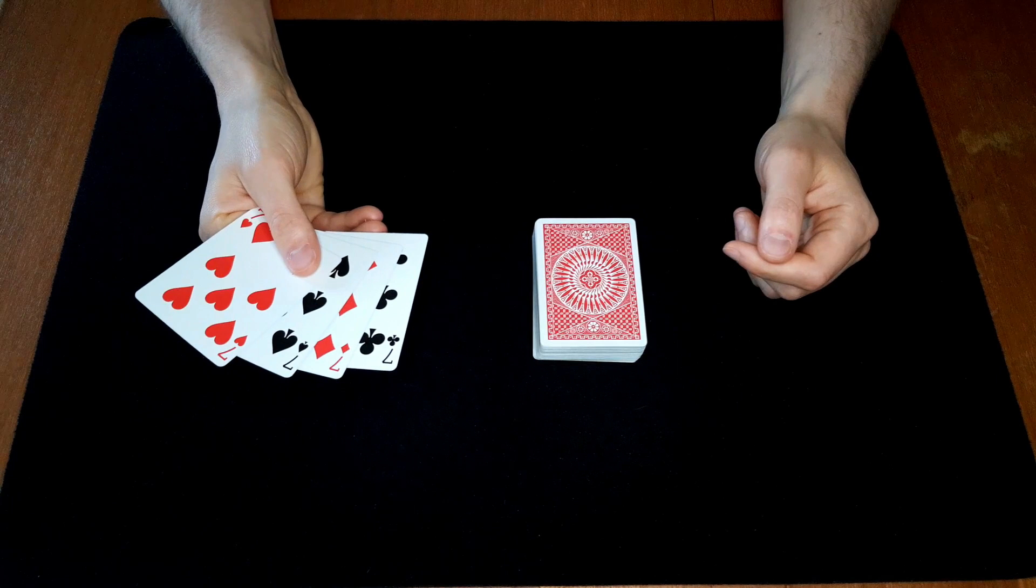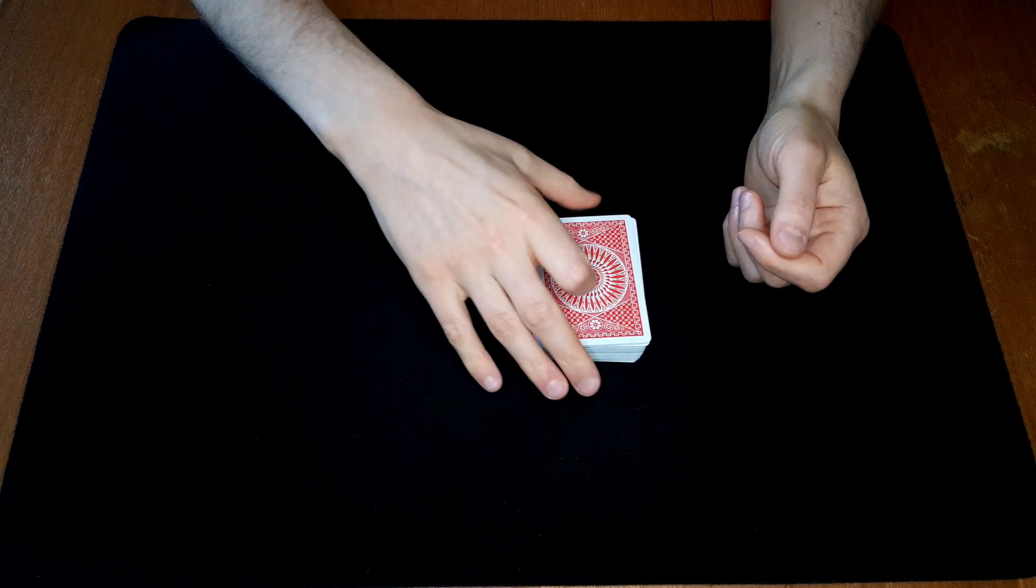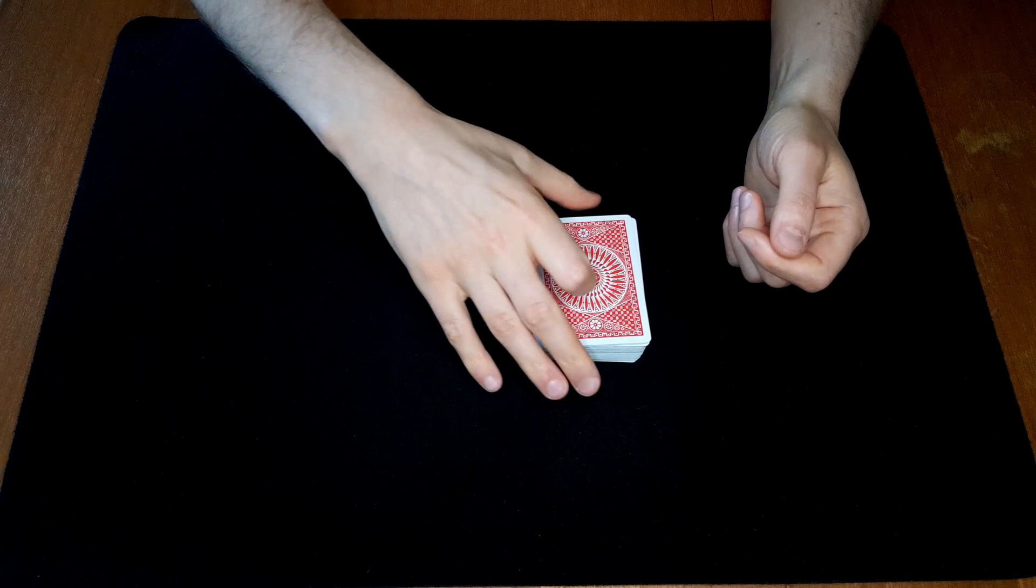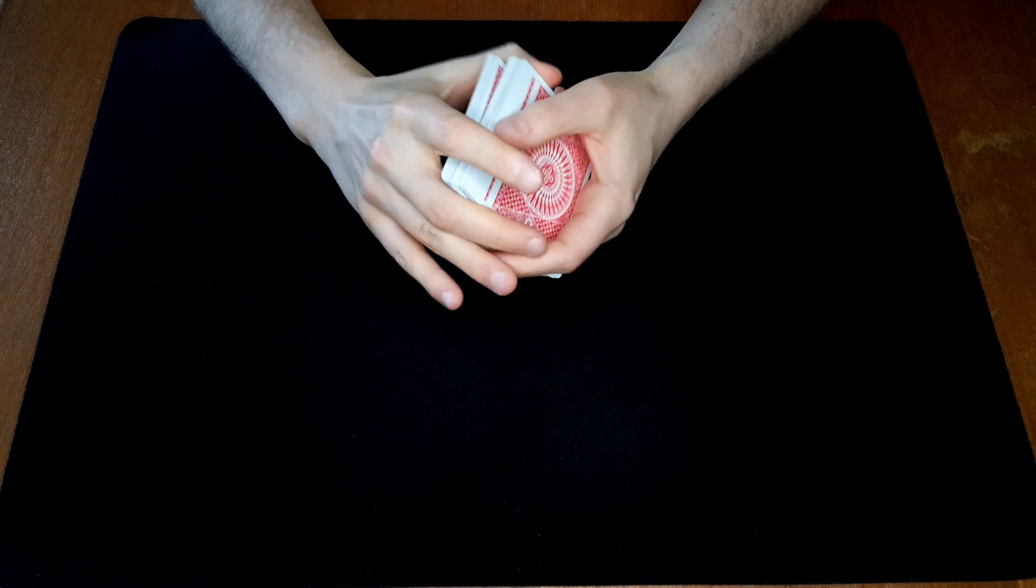So the setup for this is very easy. You have the four sevens on top, just like that. You can do that with a spread cull or just have them there from the beginning. We can always start with a false shuffle. You can learn in the video popping up right now.